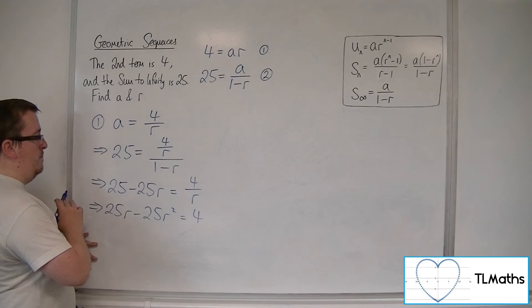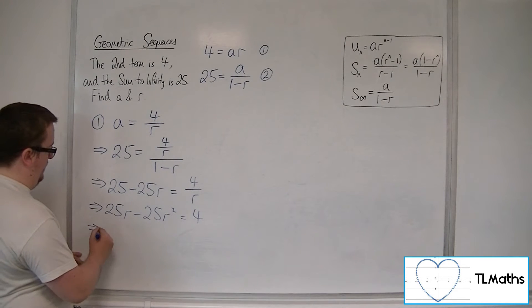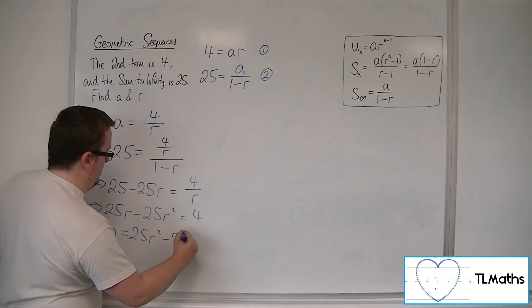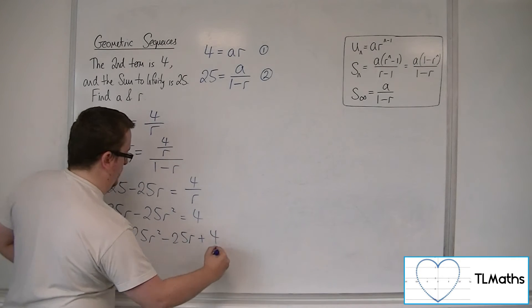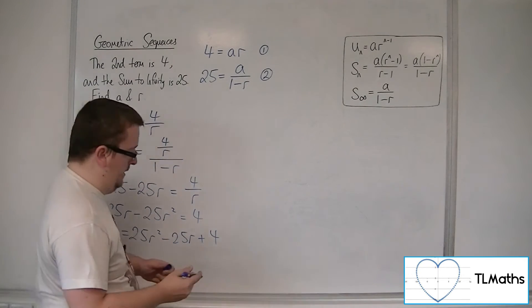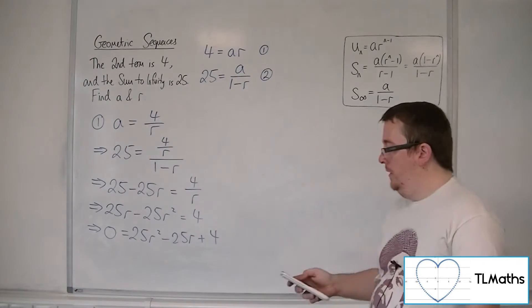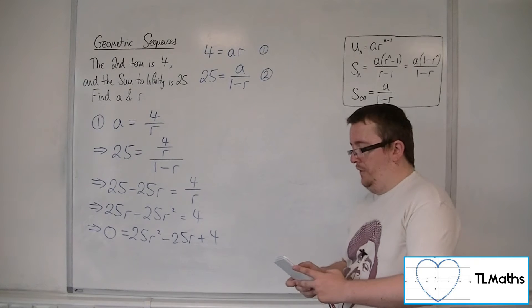So if I then move everything onto the right-hand side, we get 0 is equal to 25r squared take away 25r plus 4. So here is a quadratic equation to then solve.